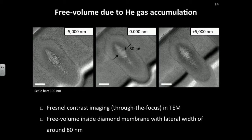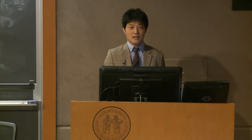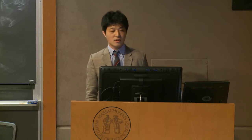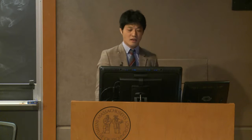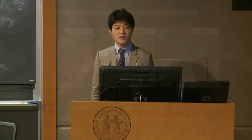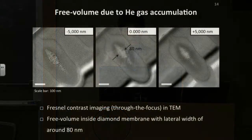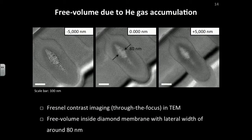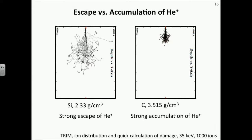Why does this kind of situation happen? Why can diamond have a totally different cross-section geometry? We think this is induced by free volume formation inside the diamond membrane. In order to check the existence of free volume, we used Fresnel contrast imaging, also called through-the-focus imaging in TEM. By making under-focus, in-focus, and over-focus images, we can find the existence of free volume inside the diamond membrane with a lateral width of around 80 nanometers.